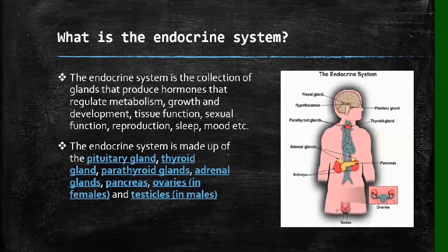What is the endocrine system? In simple terms, the endocrine system is a collection or a system of glands that produces hormones that regulate or control metabolism, growth and development, tissue function, sexual function, reproduction, sleep, mood, and so many other things.